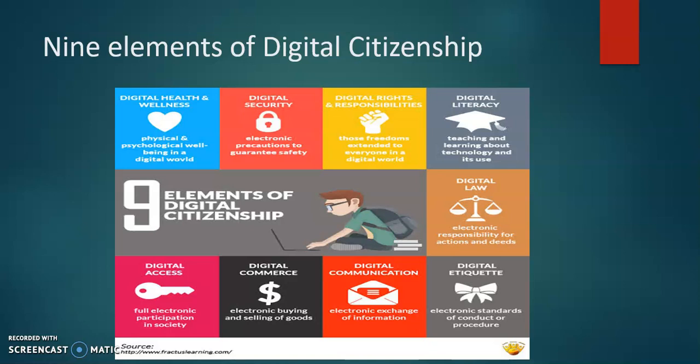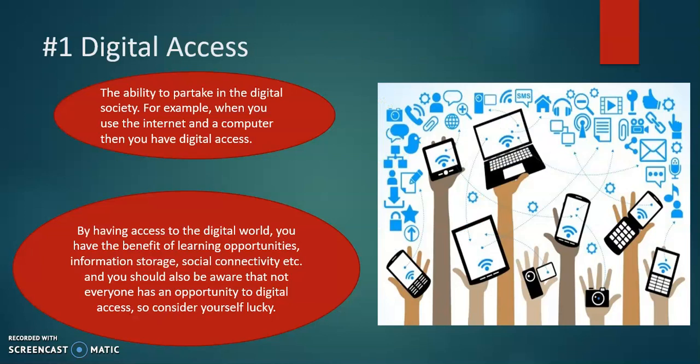We have nine elements of digital citizenship and we're going to take a look into each and every one of them. The first one is digital access, defined as the ability to partake in the digital society. For example, when you use the internet on a computer, you have digital access. By having access to the digital world, you have the benefit of learning opportunities, information storage, social connectivity, etc. You should also be aware that not everyone has an opportunity to digital access, so do consider yourself lucky.